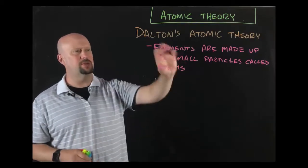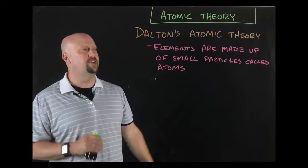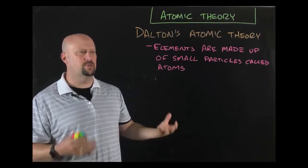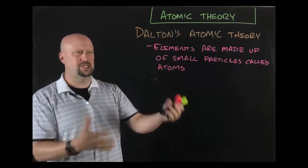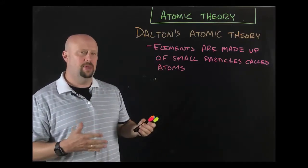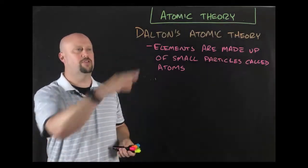Dalton's Atomic Theory starts with something we saw with the Greeks and Democritus in our last video: elements are made up of small particles called atoms. That should sound familiar. That was what Democritus and some Greeks believed.